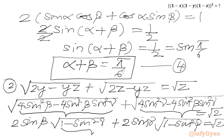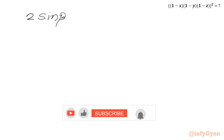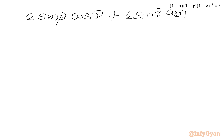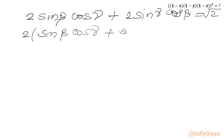Now 1 − sin²γ is cos²γ. So we write 2 sin β cos γ plus 2 sin γ cos β equals √2. Taking 2 as common: 2(sin β cos γ + sin γ cos β) equals √2.